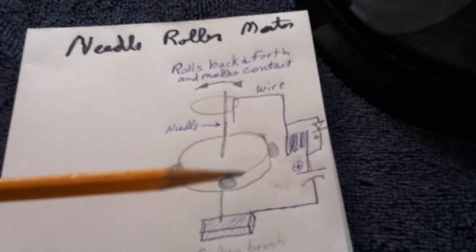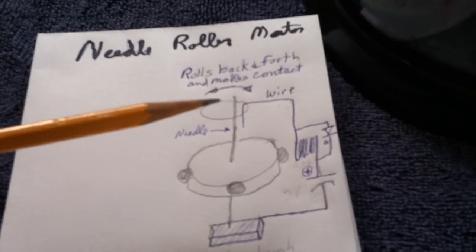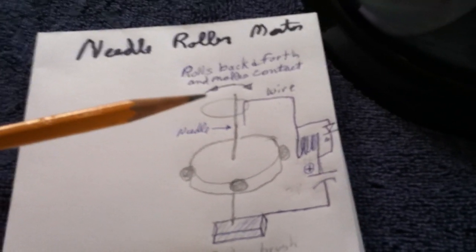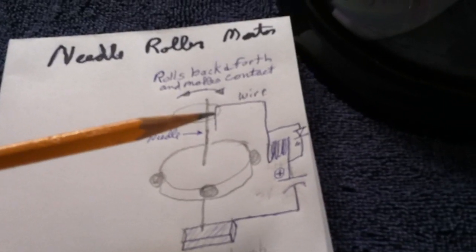As the rotor rotates, the needle rolls in this hole, and it rolls back and forth and makes contact in sort of an erratic fashion.